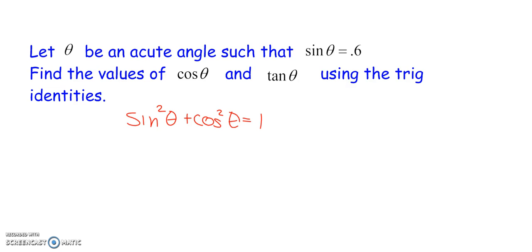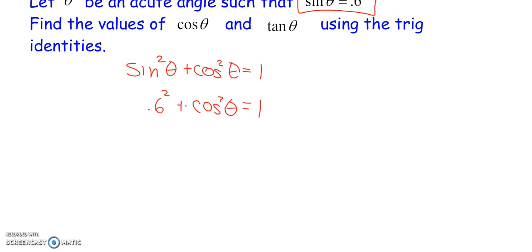Well, I have a value here for sine of theta. So, sine of theta is 0.6. So, this is 0.6 squared plus cosine squared theta has to equal one. So, here, 0.6 squared is 0.36 plus cosine squared theta equals one. So, I can subtract 0.36 both sides. We're going to cancel out. We're going to have cosine squared theta equals 0.64.